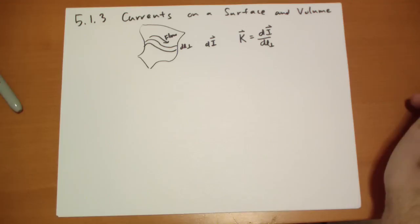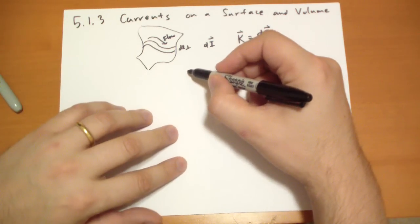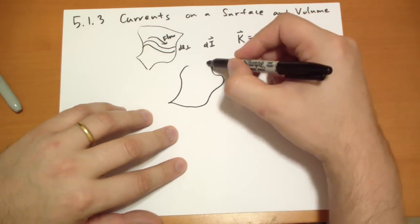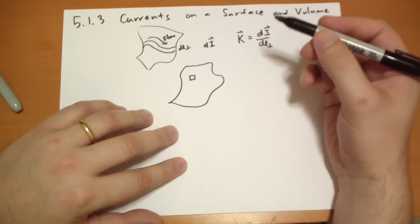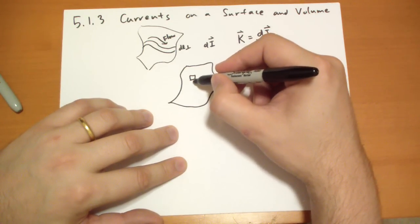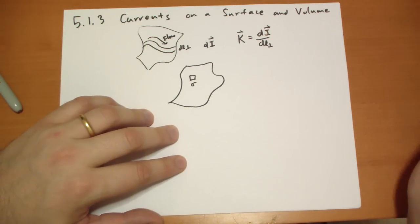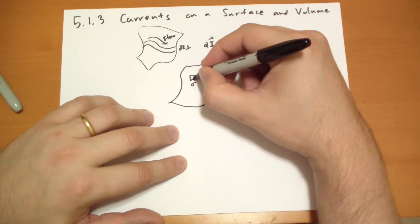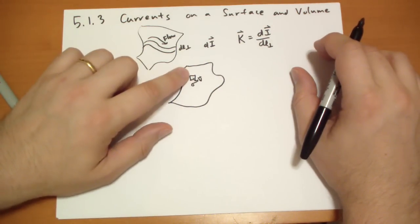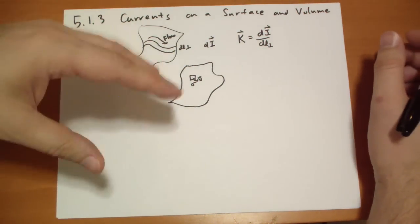Another way to look at it is, let's say we had some surface, I could have used the same surface, and then we have some patch. And this patch has a surface charge density of sigma, and at every moment in time it is moving, whatever direction.